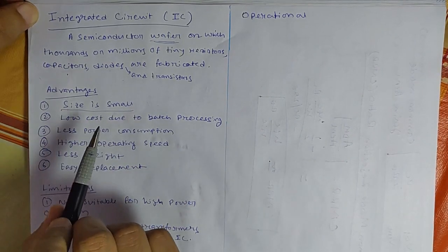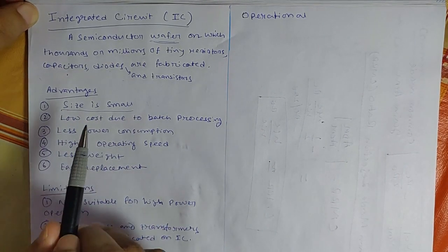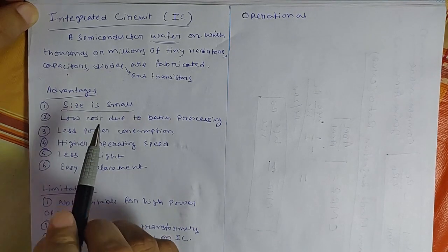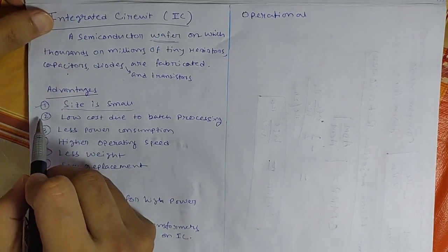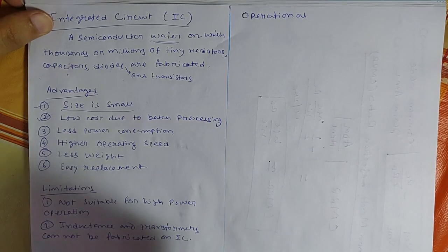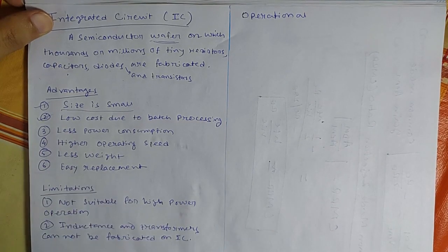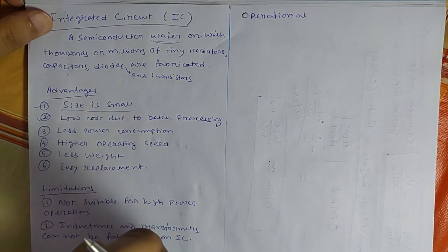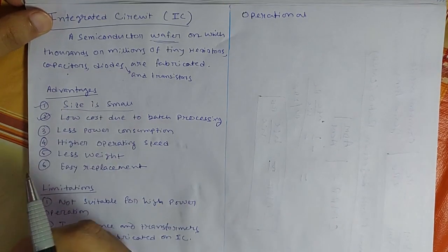And due to the small size, it is possible to incorporate large number of components within the IC. Second one is low cost due to batch processing. So cost is low because large number of IC can be fabricated on single wafer. So that will reduce the cost.